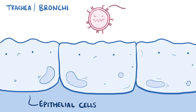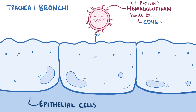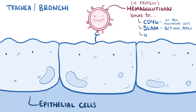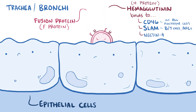The measles virus uses a protein on its surface called hemagglutinin, or H-protein, to bind to a target receptor in the host cell, which could be CD46, which is expressed on all nucleated human cells; CD150, also known as signaling lymphocyte activation molecule or SLAM, which is found on immune cells like B and T cells and antigen-presenting cells; or Nectin-4, a cellular adhesion molecule. Once bound, the fusion or F-protein helps the virus fuse with the membrane and ultimately get inside the cell.